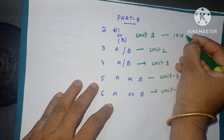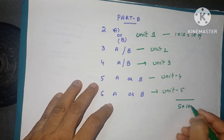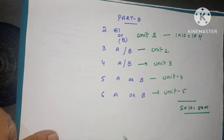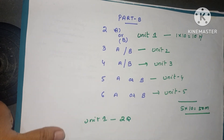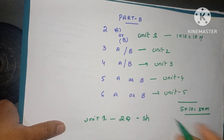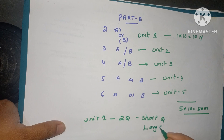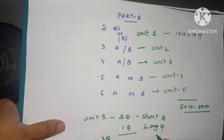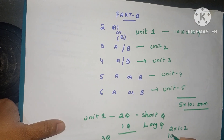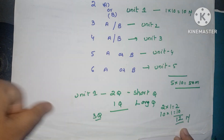You have to write one question per unit — 1 into 10 is 10 marks — so totally 5 into 10 is 50 marks. If you read one unit, there are 2 short answer questions and 1 long answer question, so 3 questions total per unit. That gives 2 into 1 equals 2 marks plus 10 marks equals 12 marks from each unit. So 5 into 12 equals 60 marks total.